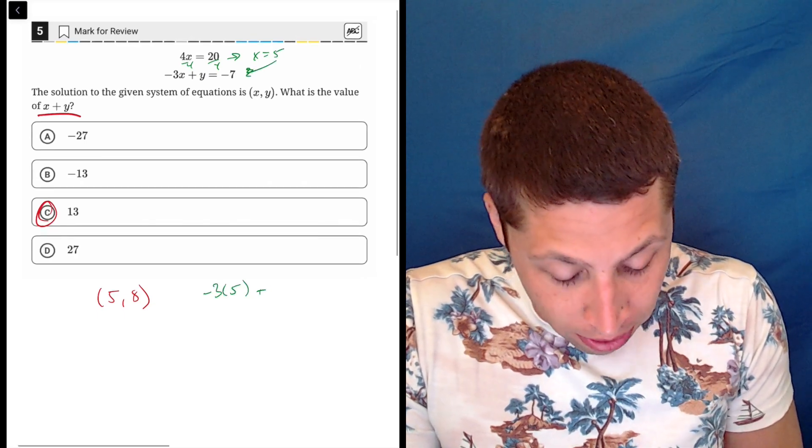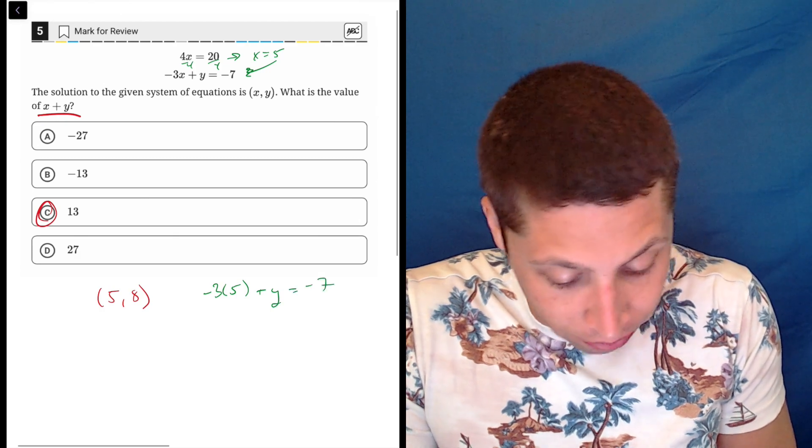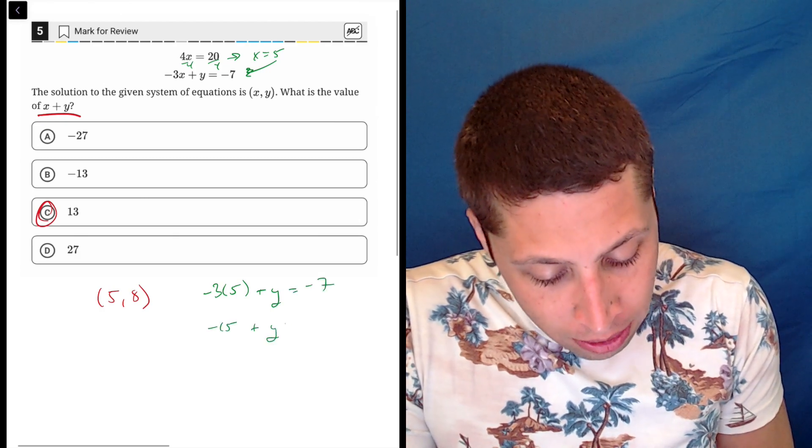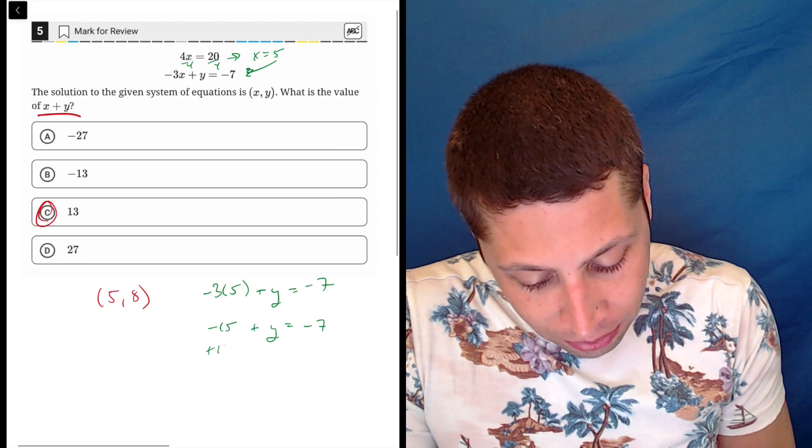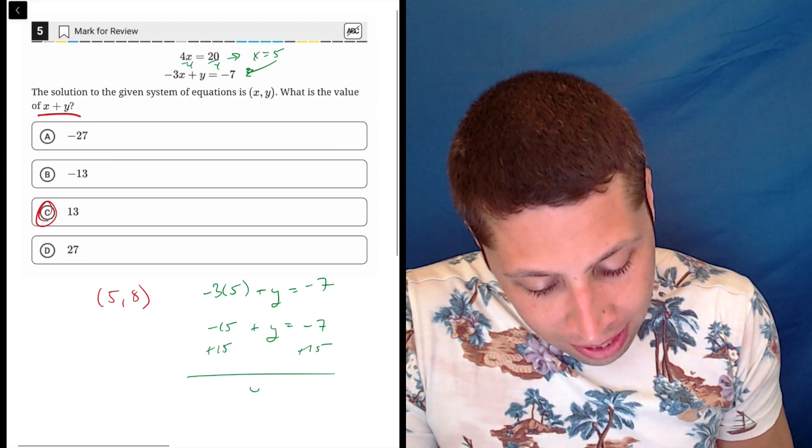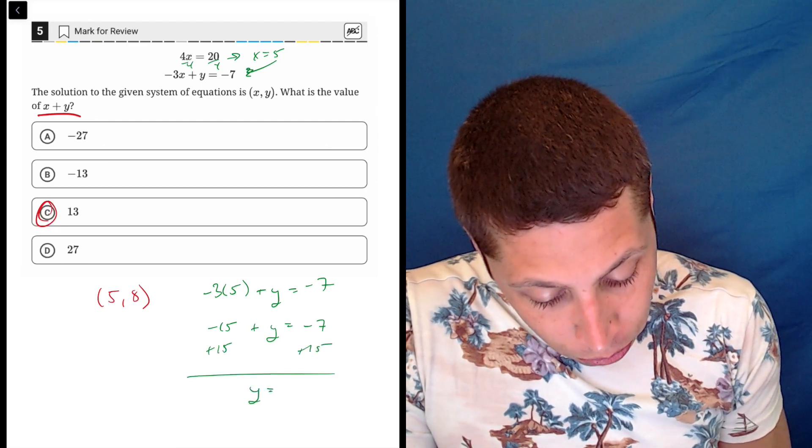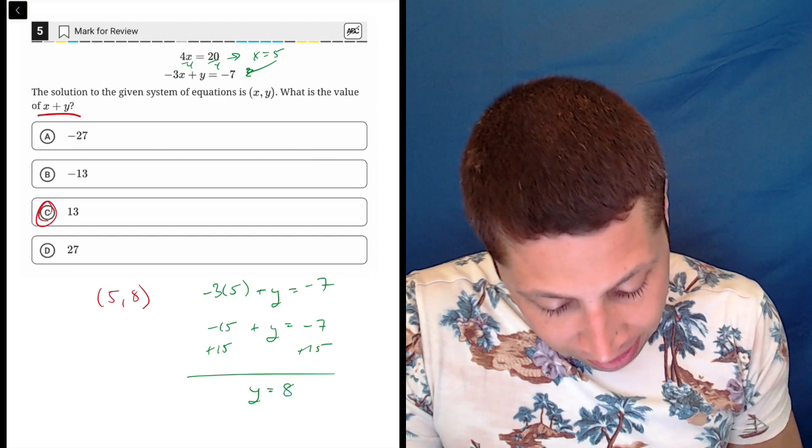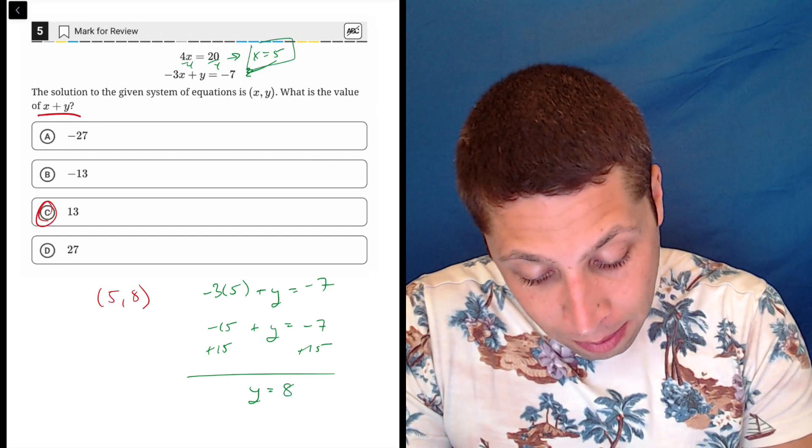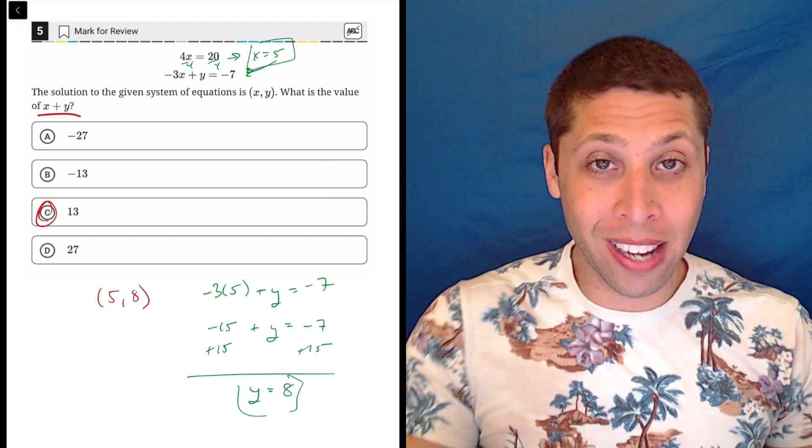Negative 3 times 5 plus Y is equal to negative 7. So that's negative 15 plus Y is negative 7. Add 15 to both sides, and we get Y is equal to 15 minus 7 is 8. That's the exact same thing we had, 5 and 8. So it's not that bad.